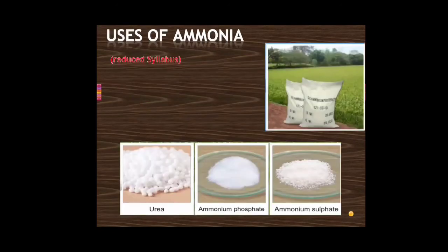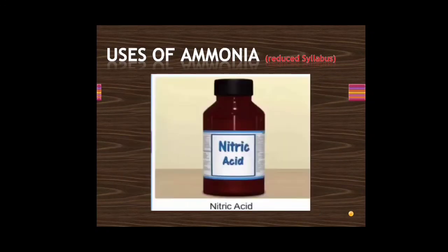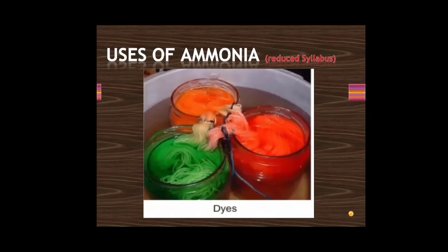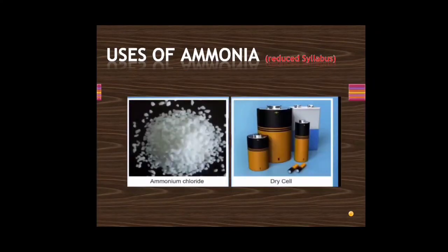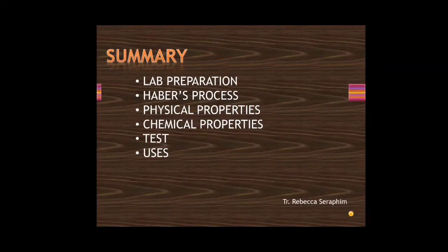The uses of ammonia (reduced syllabus — for information only): ammonia is used in preparation of urea, plastics, artificial silk, nitric acid, explosives, washing soda, baking soda, dyes, and drugs. It is used in compressors as a refrigerant, in preparation of dry cells, for smelling salts, and ammonium carbonate. In summary, we covered laboratory preparation, Haber's process, physical and chemical properties, tests, and uses of ammonia.